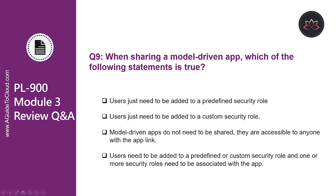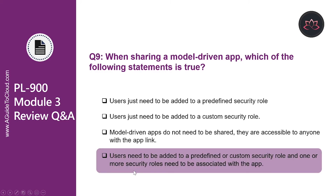Question number nine. When sharing a model-driven app, which of the following statements is true? Is it that users just need to be added to a predefined security role? No. Is it that users just need to be added to a custom security role? That doesn't work either. Is it that model-driven apps do not need to be shared and are accessible to anyone using the app link? That is wrong. The correct statement is users need to be added to a predefined or custom security role, and one or more security roles need to be associated with the app, granting rights to access the app.